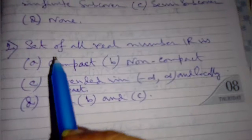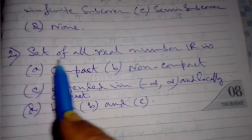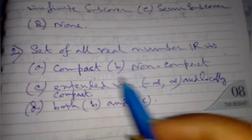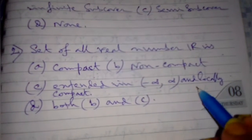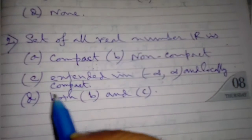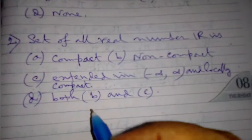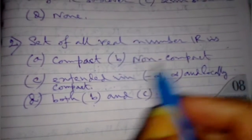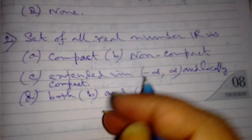And now for the next one, quite similar with the first one, pertaining to the same questions. Set of all real numbers in R: which is (a) compact, (b) non-compact and extended in minus infinity to infinity, and also if we consider as locally compact. And next option is both (b) and (c), that means non-compact and this criteria.